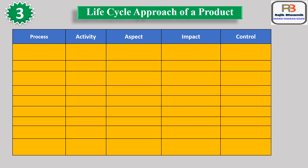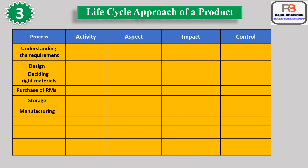I will explain this with a table with five columns: Process, Activity, Aspect, Impact, and Control. In the process column we consider all stages like: understanding the requirement, design, deciding right materials, purchase of raw materials, storage, manufacturing, dispatch, product used by customer, and disposal of leftover product and packaging. After this, the Activity, Aspect, Impact, and Control columns are to be filled. All products are to be analyzed in this manner.